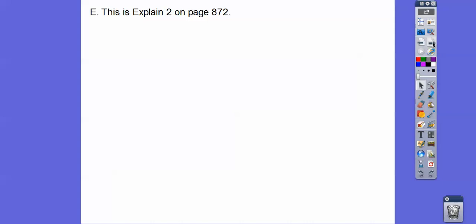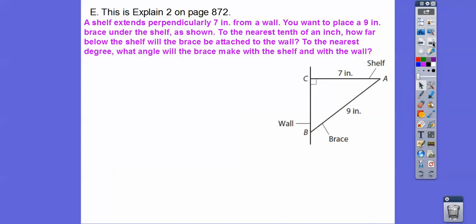Alright. So here's an application problem, Explain 2 on page 872. A shelf extends perpendicularly from a wall. Okay. So here's our shelf right here. That's perpendicularly from a wall, seven inches from the wall. We want to place a nine inch brace right here. So, here's a nine inch brace right here underneath the shelf to the nearest tenth of an inch. How far below the shelf will the brace be attached? Oh, that's this down here.